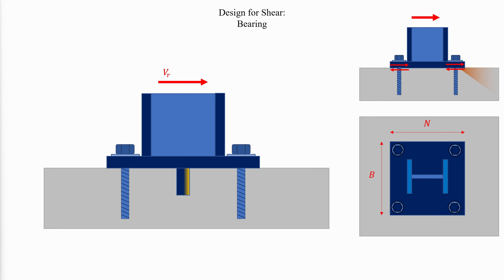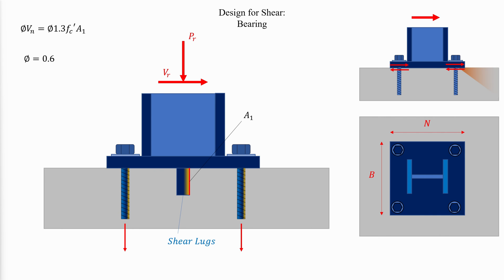Shear forces can be transferred in bearing by the use of shear lugs or by embedding the column in the foundation. When shear lugs are used, shear is initially transferred through the anchor rods to the grout or concrete by bearing augmented by shear resistance from confinement effects, then progresses into a shear friction mode. The recommended bearing limit per ACI 349 Appendix B section B4.5.2 is given in terms of A1, the contact area between the shear lug and the concrete, accounting for confinement effects of tension in the anchors and external axial load.